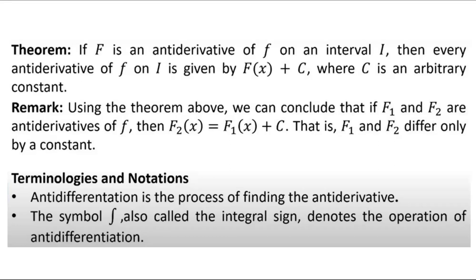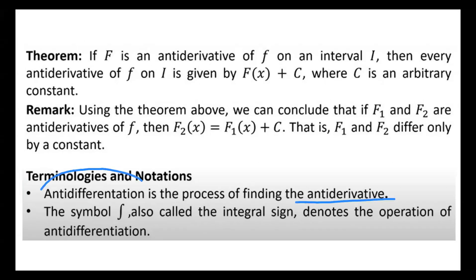The remark: if F₁ and F₂ are antiderivatives of small f, then F₂(x) = F₁(x) + C — meaning F₁ and F₂ differ only by a constant. Antidifferentiation is the process of finding the antiderivative. When we take derivatives, we call the process differentiation. Since we are finding antiderivatives, we call the process antidifferentiation.